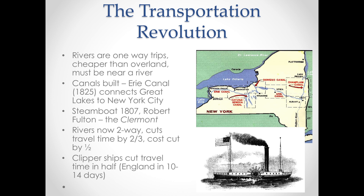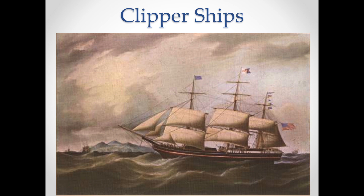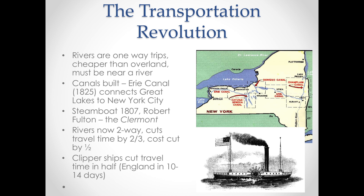Another major improvement was the steamboat. The very first steamboat was in 1807, created by Robert Fulton — it was called the Clermont. Steam-powered ships could go faster and travel against the river's current. The Clermont could travel from New York City to Albany in 32 hours; the same journey previously took four days. There were also clipper ships introduced, capable of crossing the Atlantic Ocean and cutting travel time to England in about half — from 20 to 28 days down to about 10 to 14 days.